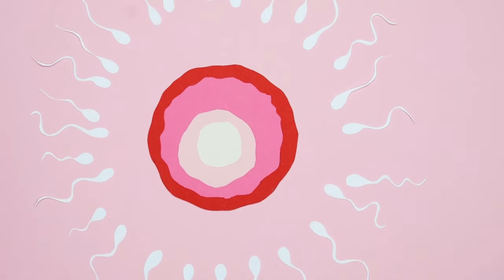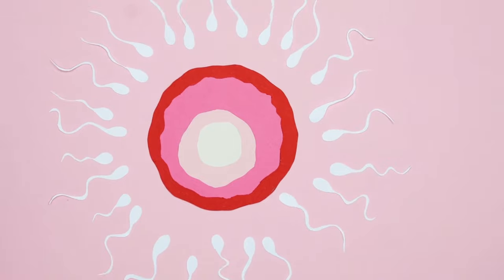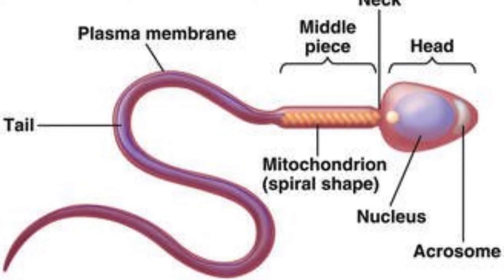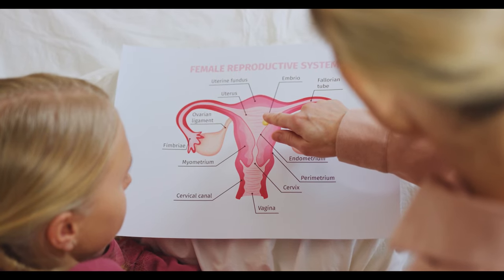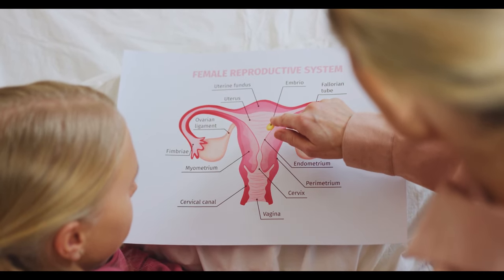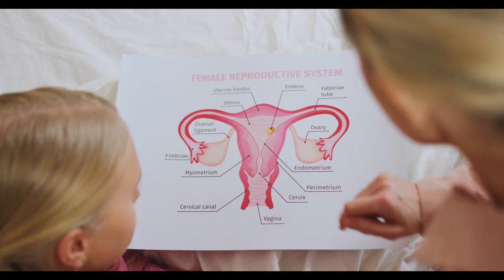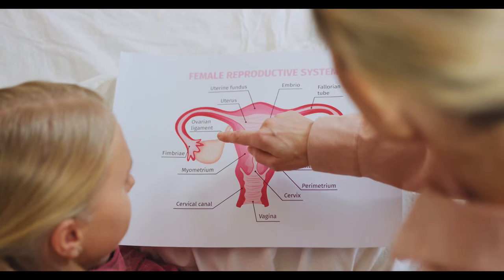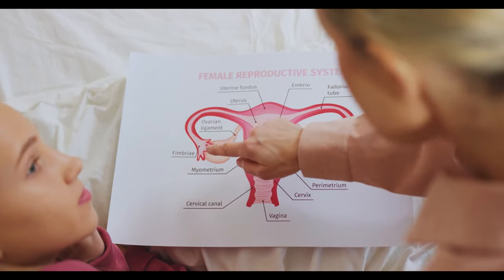Unlike in females, the formation of spermatozoa — spermatogenesis — is continuous and non-cyclical. Before ovulation in the menstrual cycle in which the pregnancy takes place, the uterus or womb, where the baby would stay for about 9 months, prepares its inner linings to make it habitable and comfortable for the baby.